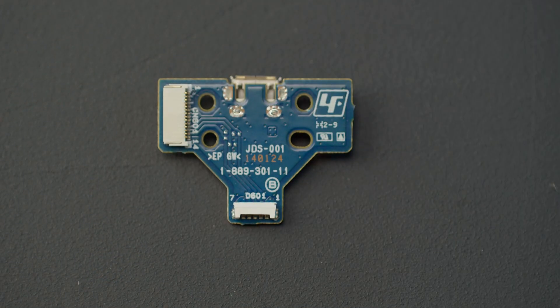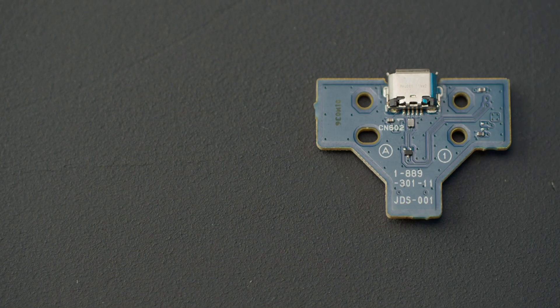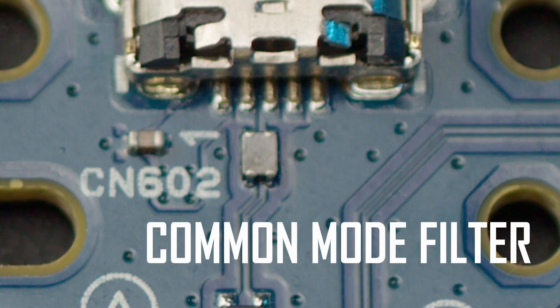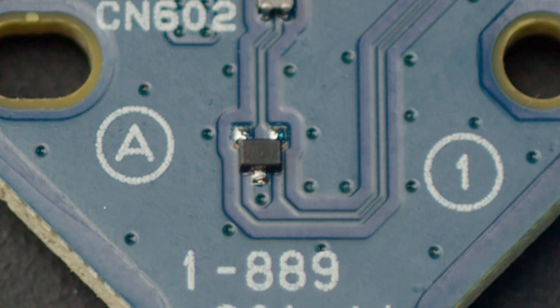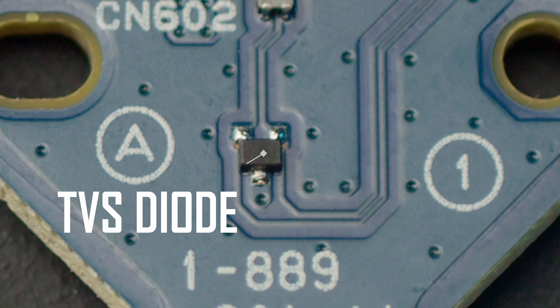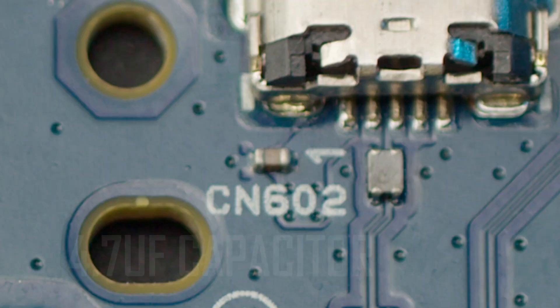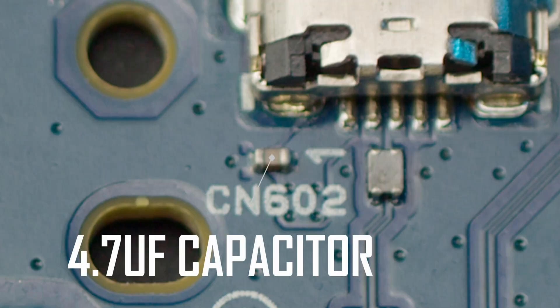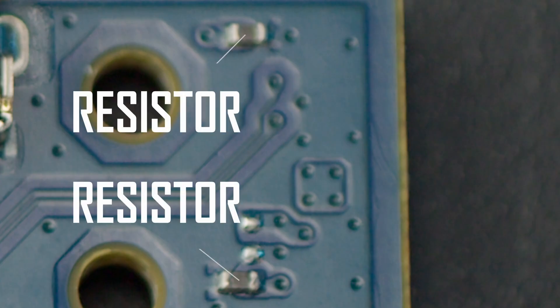First, let's identify all the components and include them in our design. A common mode filter to remove noise from the data lines, a TVS diode to protect it from static electricity, a 4.7 microfarad decoupling capacitor for noise reduction, and these two resistors that I measured to be about zero ohm.